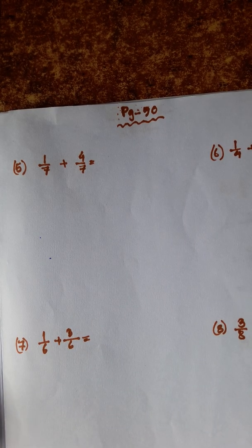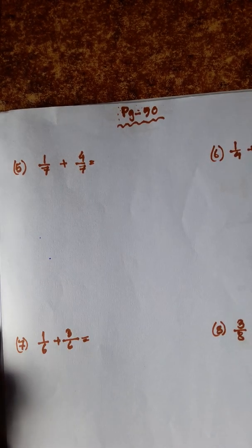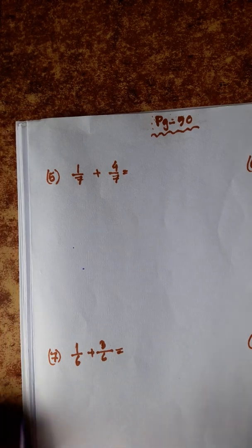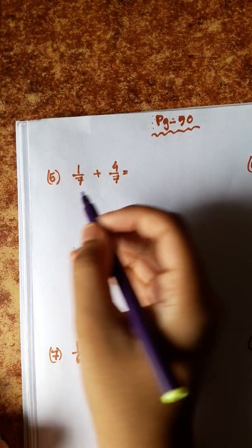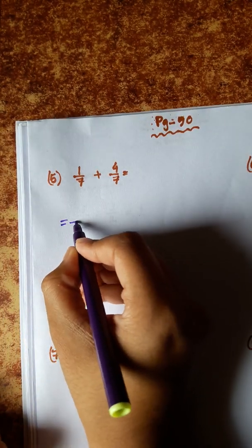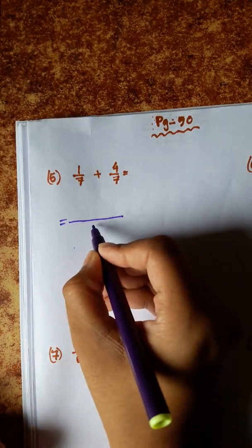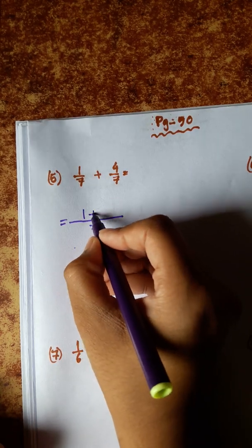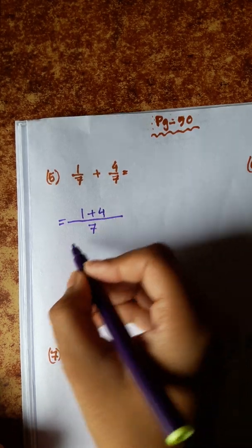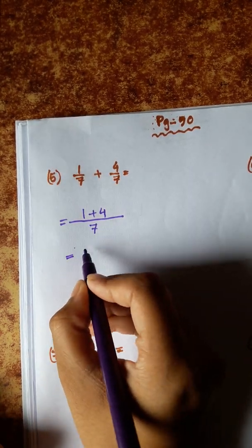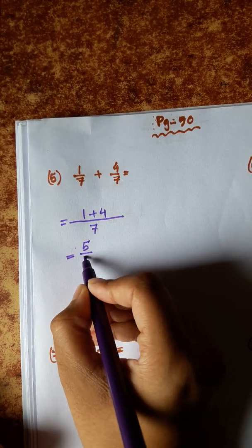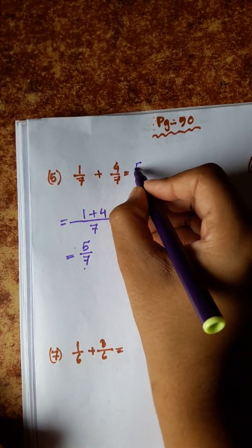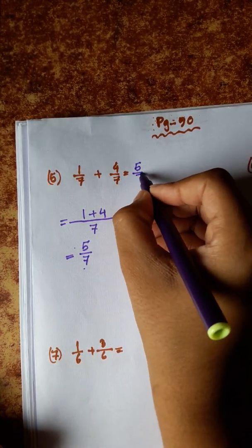Next: 1 by 7 plus 4 by 7. The denominator is the same: 7. So 1 plus 4 equals 5. The answer is 5 by 7.